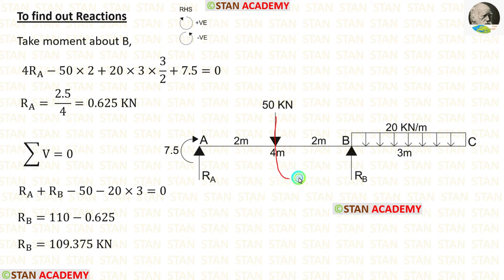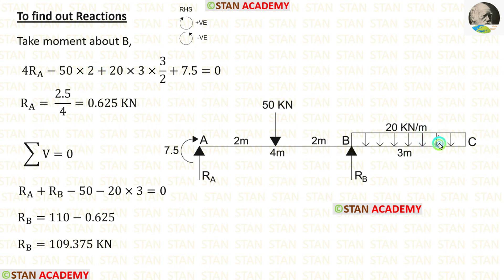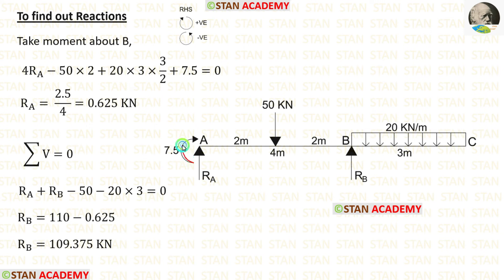The point load 50 kN acts towards B in the anti-clockwise direction, so it is negative with distance 2, giving minus 50 × 2. The UDL acts towards B in the clockwise direction, so it is positive. For UDL, we multiply by the distance and distance divided by 2. The moment MAB is also acting in the clockwise direction, so it is positive. Finally, we get RA = 0.625 kN.